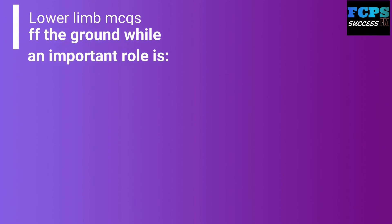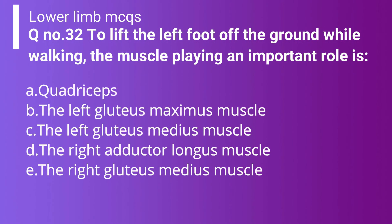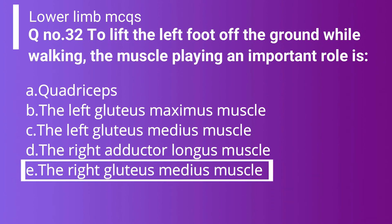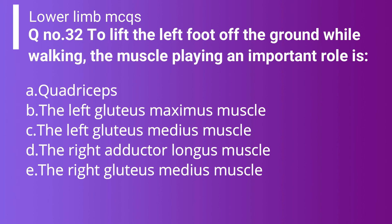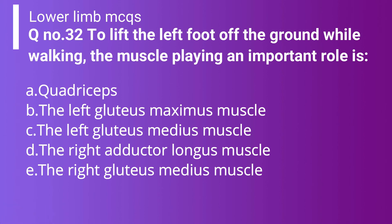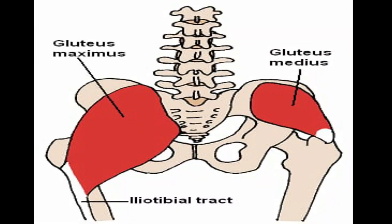Question 32: To lift the left foot off the ground while walking, the muscle playing an important role is: Option A: Quadriceps. Option B: Left gluteus maximus. Option C: Left gluteus medius. Option D: Right adductor longus. Option E: Right gluteus medius. The correct answer is Option E — right gluteus medius — because it provides pelvic stability, allowing the left foot to be lifted. The trick in this question is that it asks about the left foot but the answer is the right gluteus medius. Remember that the gluteus medius always supports the opposite side of the pelvis during walking.